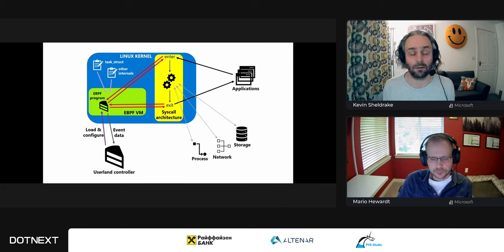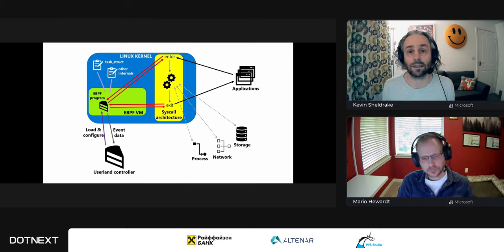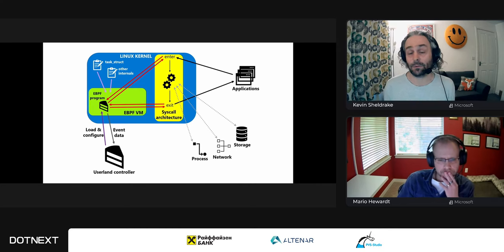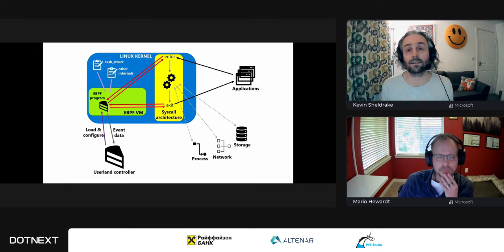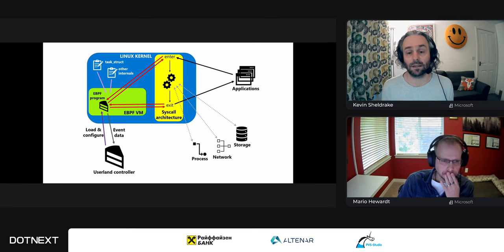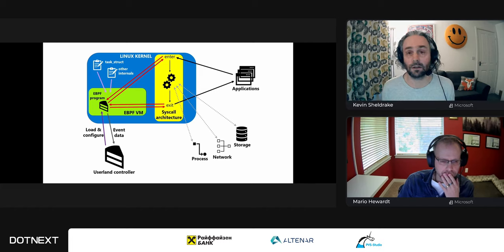From there, the eBPF program can access kernel internals like the task struct through APIs, store that information, and transmit information back to the userland part. When it's finished, control returns to where the trace point was — the syscall runs as normal — then hits the exit point of the syscall architecture, where another program can be attached to access things like the return value. The application is usually completely unaware that an eBPF program was involved in that execution path.